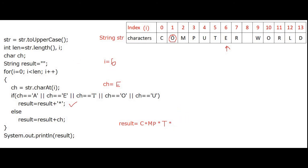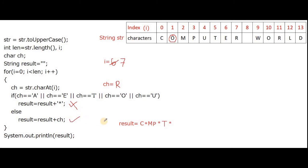Next iteration i++ so i is now 7. Position 7 is 'R'. R is extracting and storing into CH. Checking whether R is a vowel — no, R is not a vowel. So the if-statement is not executing, the else part executes. With the last value of result, CH which is R is concatenating. The plus here means concatenation, so R is storing, giving C*MP*T*R.